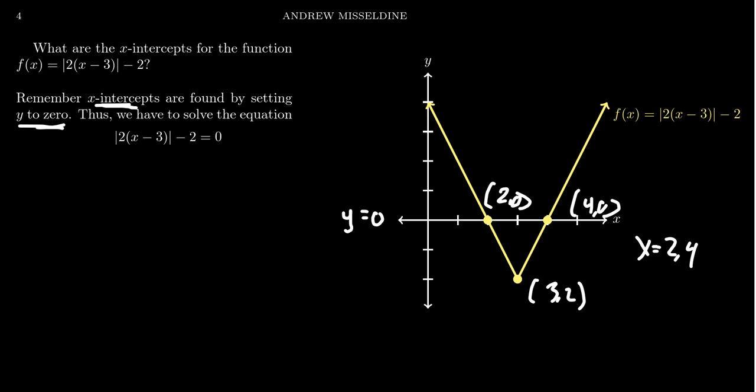So if we want to solve for the x-intercepts, we're essentially just trying to solve the equation: my function equals 0. This is true for any function. But what particularly happens when you try to solve this with absolute value? Well, trying to solve this right here, my first thing to do is I would add 2 to both sides. That's fairly routine from what we've done in the past. Then we get 2 times x minus 3, all inside the absolute value, is equal to 2.